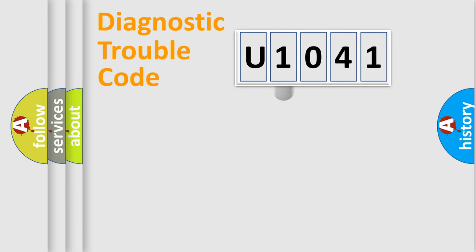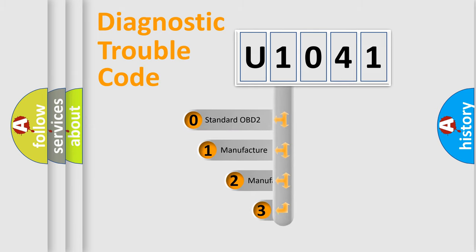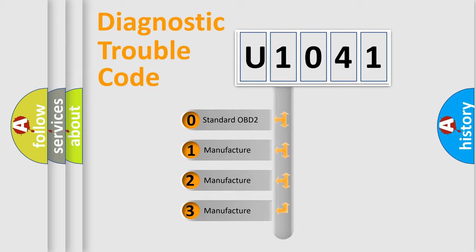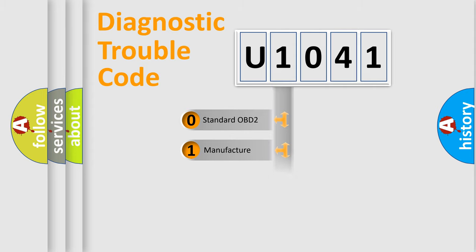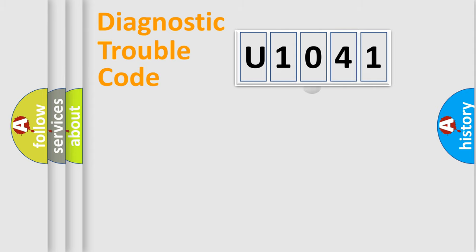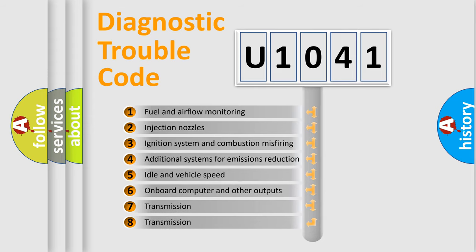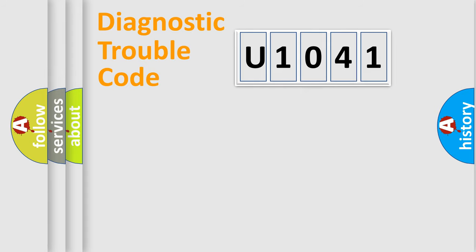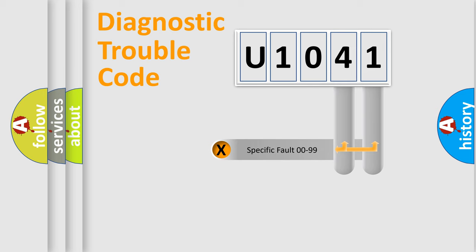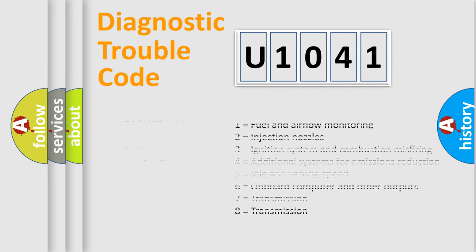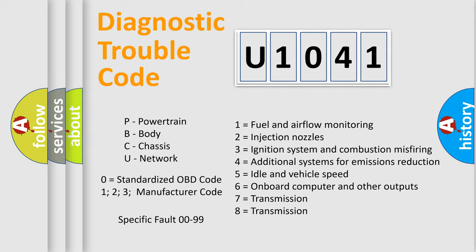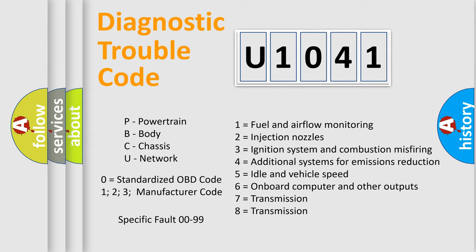This distribution is defined in the first character of the code. If the second character is zero, it is a standardized error. In the case of numbers 1, 2, or 3, it is a manufacturer-specific error. The third character specifies a subset of errors, and this distribution is valid only for the standardized DTC code. Only the last two characters define the specific fault within the group.